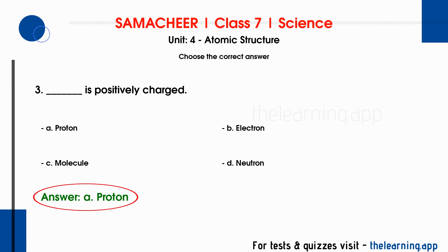Protons are positively charged. Electrons are negatively charged. Neutrons are neutral particles — they have no charge. So proton is positive, electron is negative, and neutron is neutral.